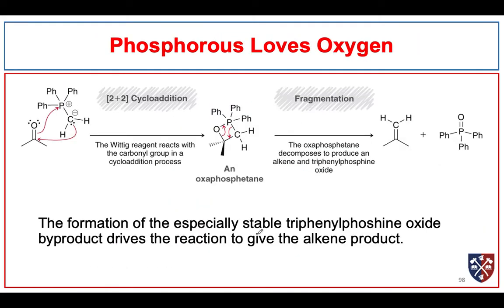Here we see the reaction drawn as a concerted mechanism to form this oxaphosphetane intermediate, which is unstable and decomposes to produce an alkene and triphenylphosphine oxide. In this case, we've seen a terminal alkene because we used methyl bromide as our carbon source.